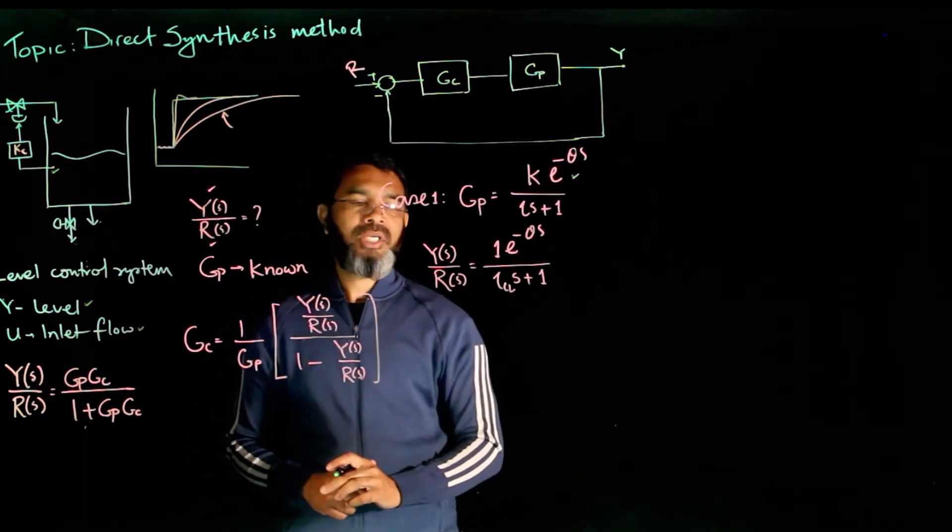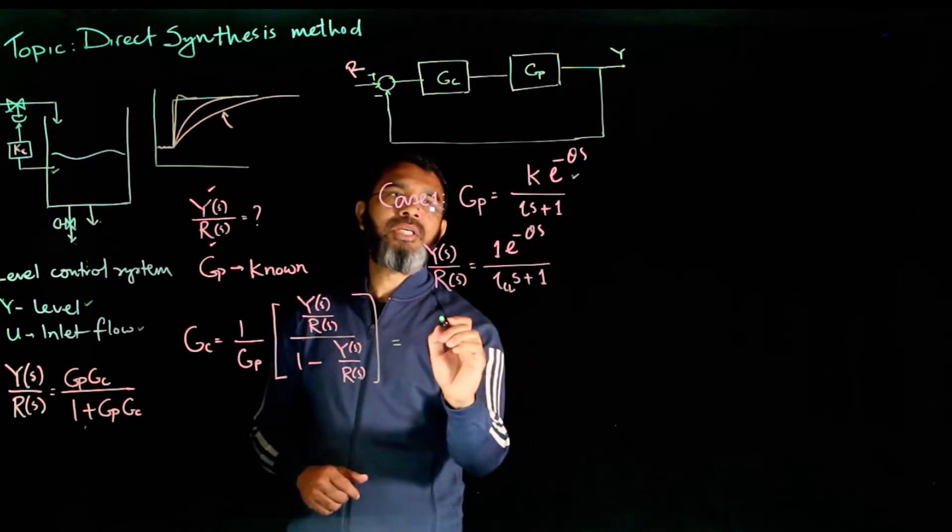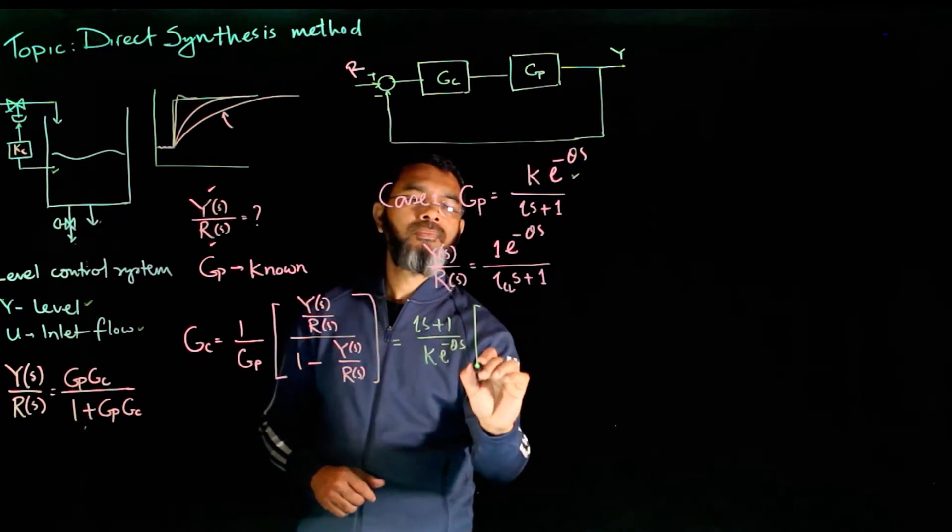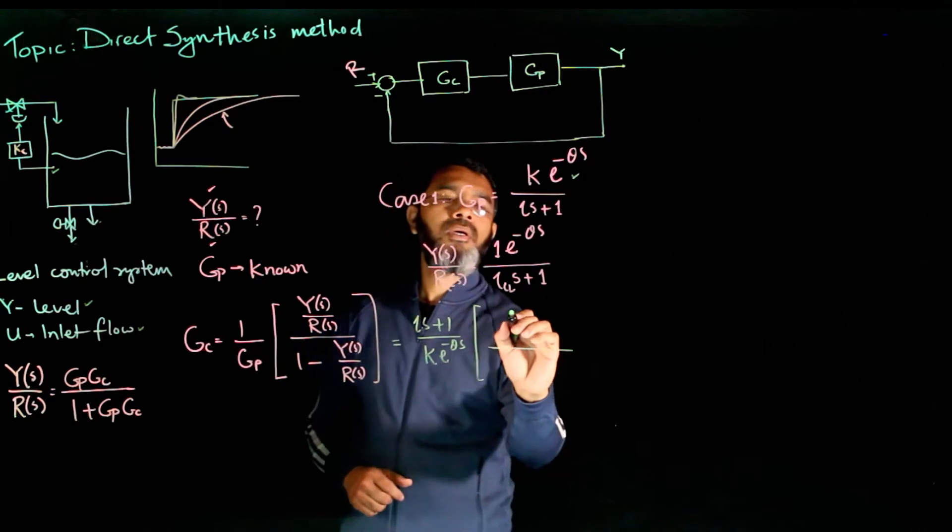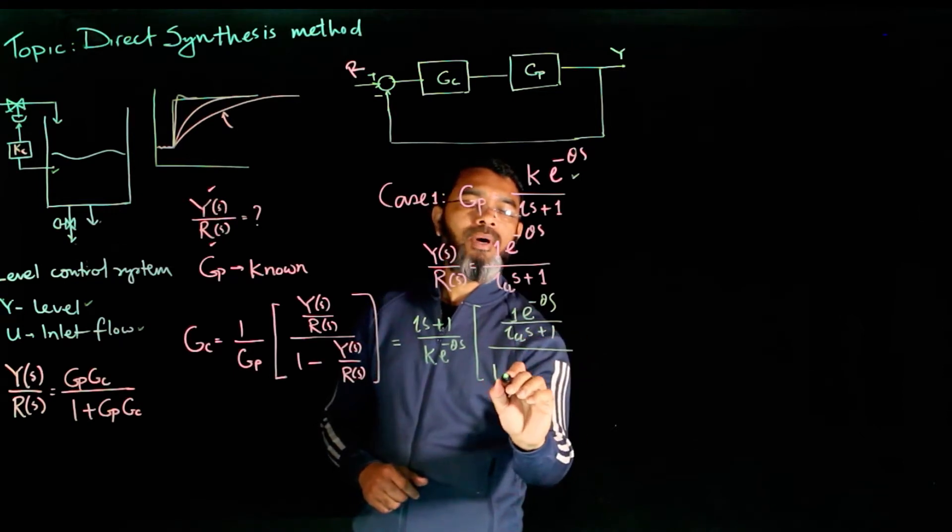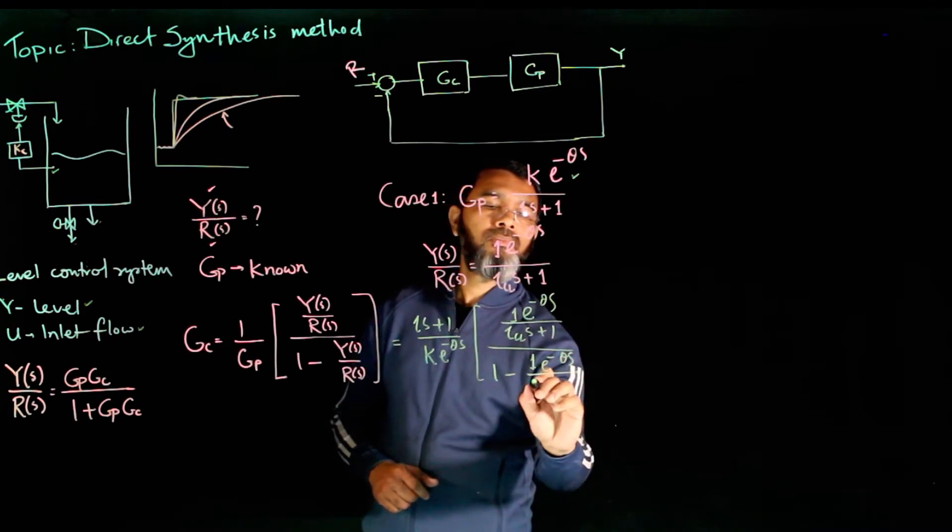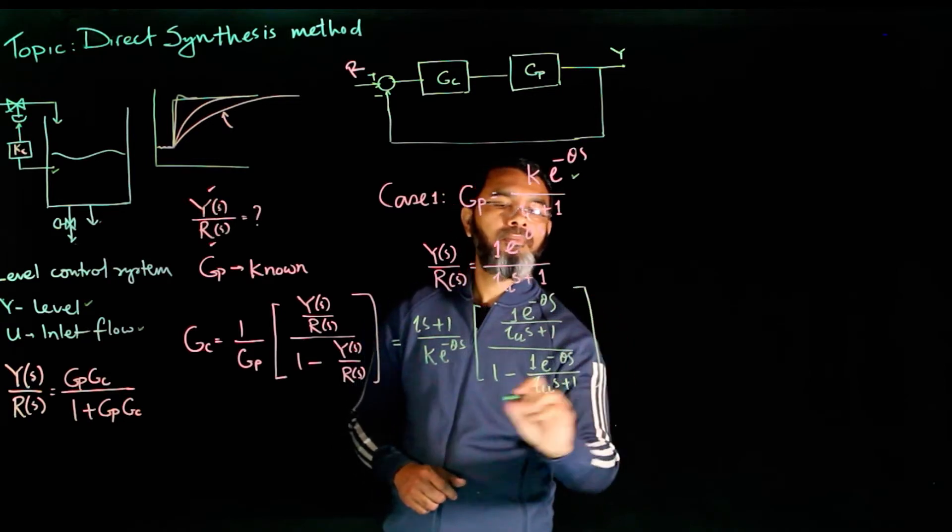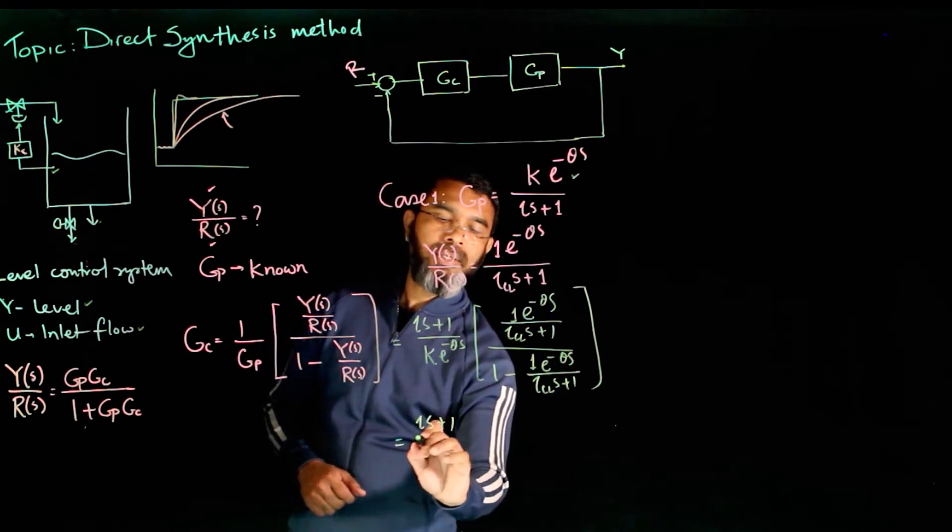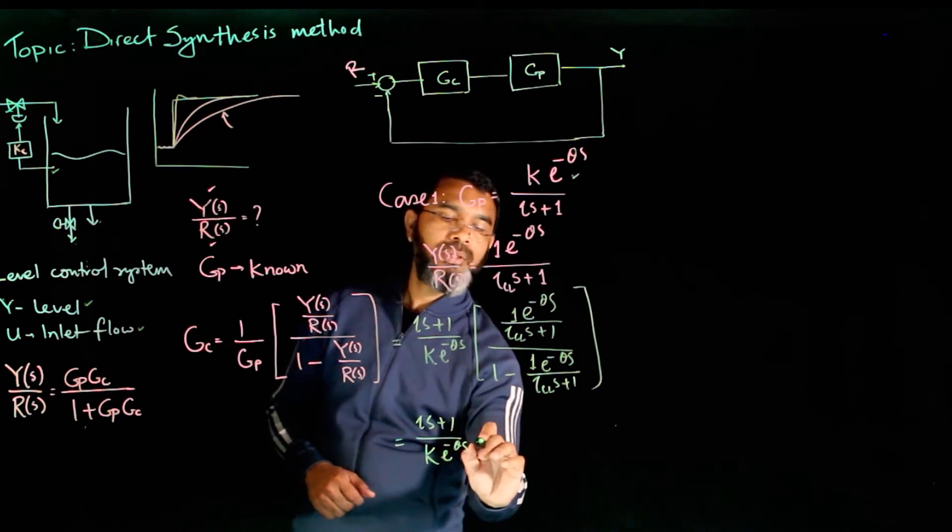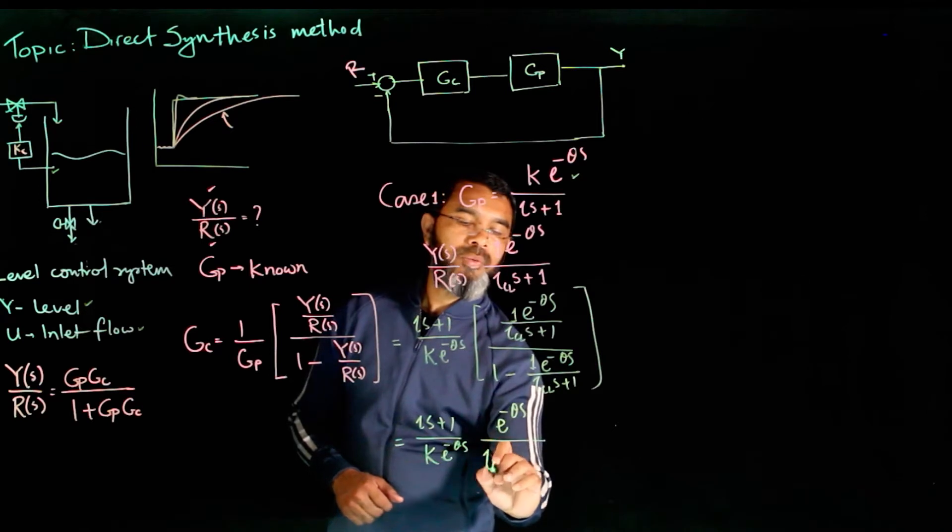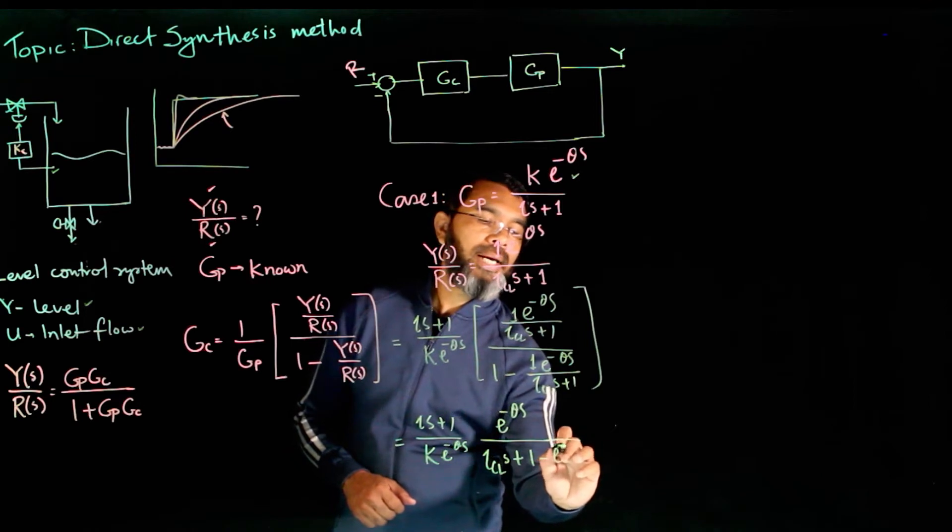If you have this Gp and this closed loop response, if you simply plug it in this equation, you will end up getting 1 over Gp will become (τs + 1)/(k e^(-θs)) and this term will be 1/(τ_cl s + 1) e^(-θs). Now if you simplify this term, you will end up getting (τs + 1)/(k e^(-θs)) and here it will be e^(-θs)/(τ_cl s + 1) minus e^(-θs).